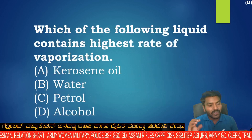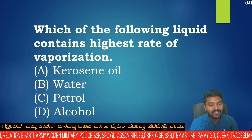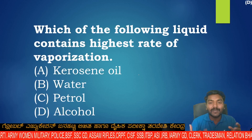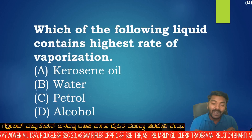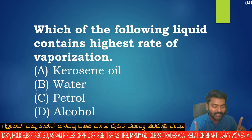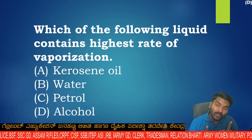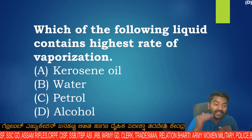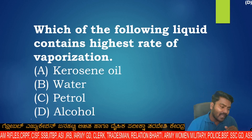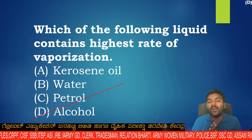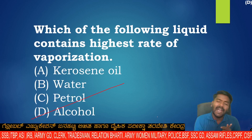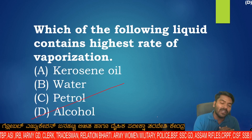Which of the following liquids has the highest rate of vaporization? The options are kerosene, water, petrol, and alcohol. The highest rate of vaporization is found in alcohol — alcohol has the highest rate of vaporization.